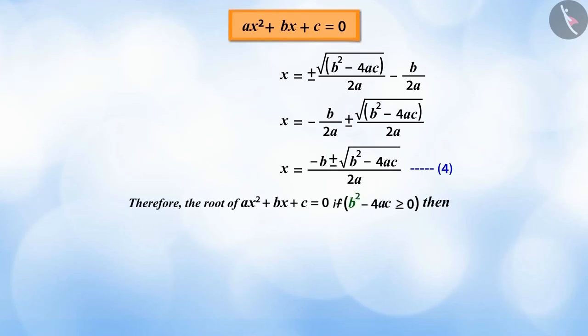If b to the power of 2 minus 4ac is greater than or equal to 0, then this gives two real roots of the quadratic equation ax to the power of 2 plus bx plus c equals 0.